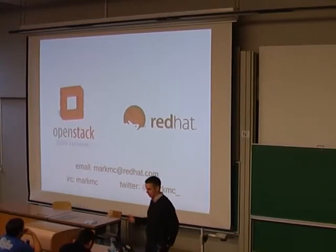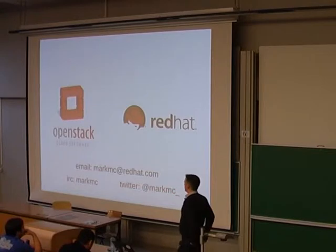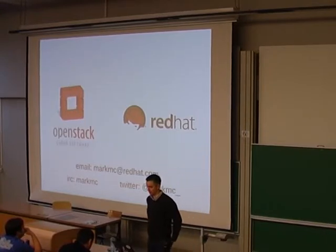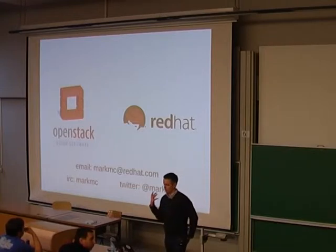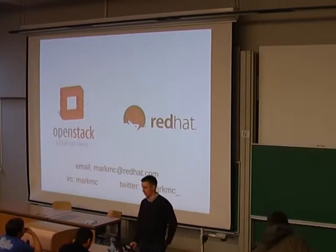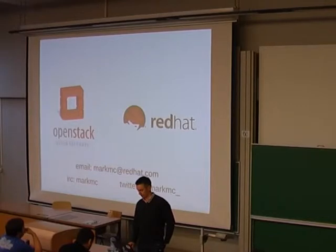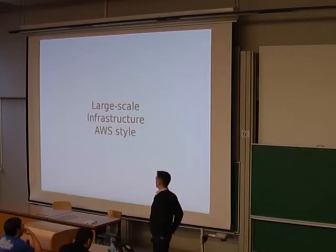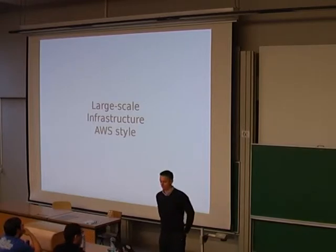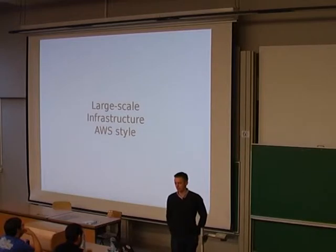I'm going to talk a little bit about what OpenStack as a project is trying to build, what our users are trying to do with that software, a little bit about how OpenStack is architected, and then talk about how best to deploy that architecture. So OpenStack is trying to build software for large-scale infrastructure as a service — more specifically, AWS-style cloud.